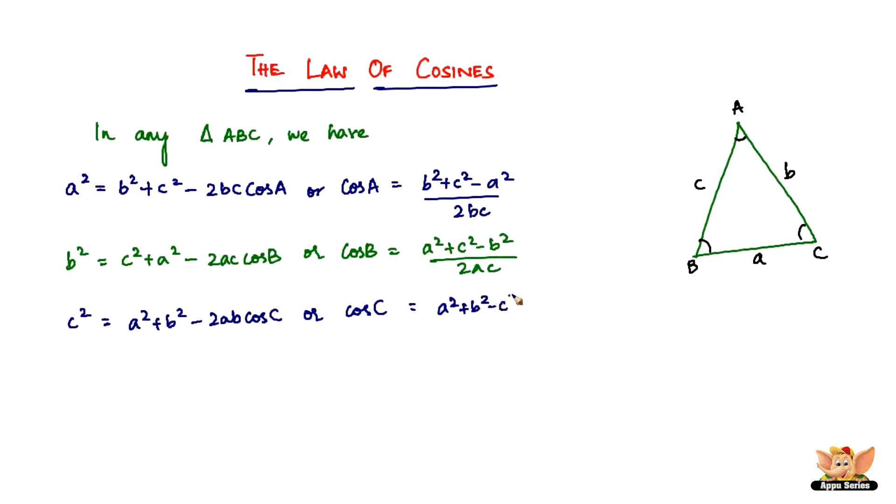plus b² - c² divided by 2ab. So these are the three formulas or equations—whatever you want to call them—forms the law of cosines. Just like the sine rule or the law of sines, we've got this law of cosines.